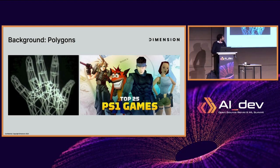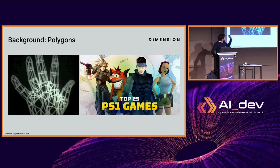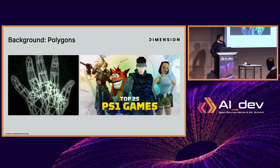First, a bit of background. Historically, 3D assets have been made out of polygons, usually triangles, because they're the simplest polygons to deal with. Most of you in the room are old enough to remember the PlayStation 1, where back in the day the triangles making up the character were fairly obvious — you could see them and count them. That other image on the right is considered to be the very first computer-generated 3D asset.